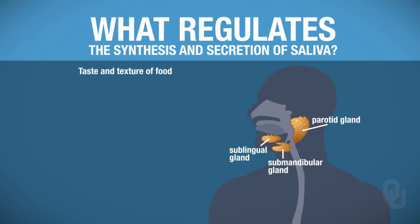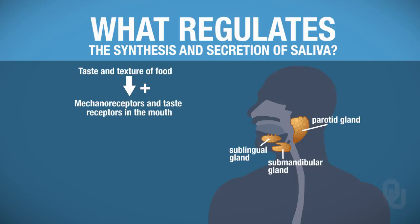The taste and texture of food is going to stimulate — we'll use a plus for stimulate — it's detected by mechanoreceptors and taste receptors in the mouth. Once these receptors detect the taste and texture of the food, that will send a message to the salivary center of the medulla.